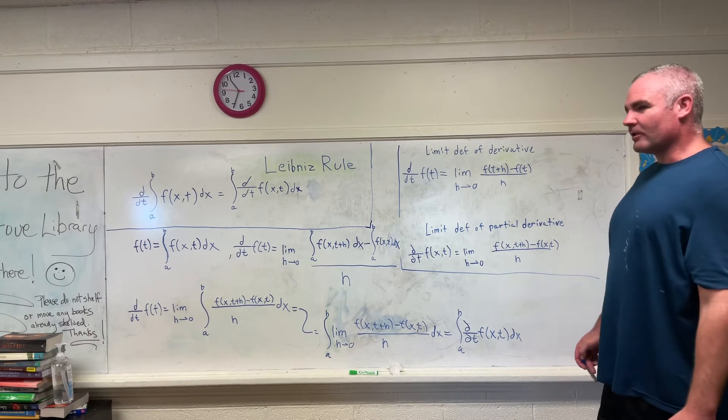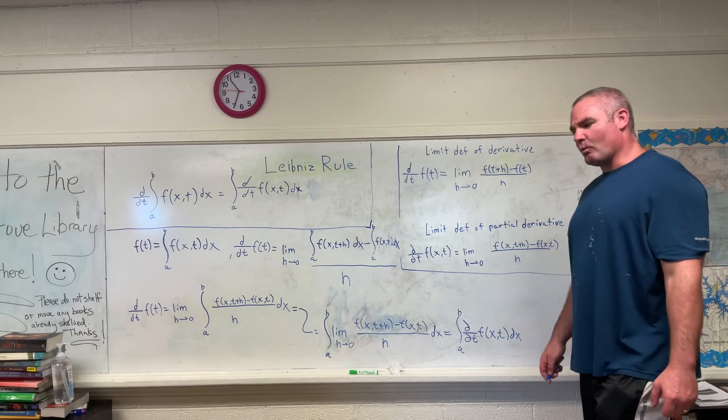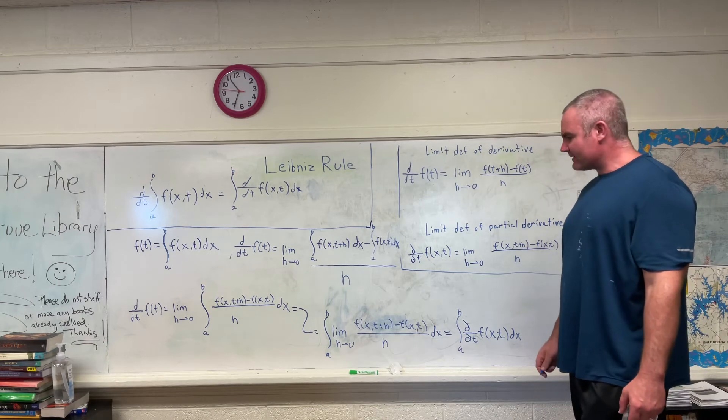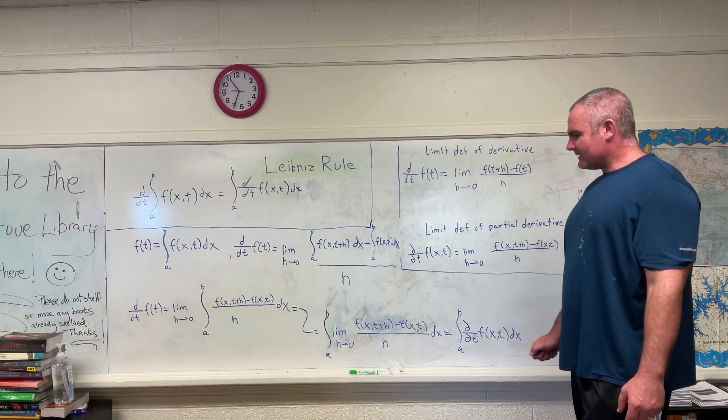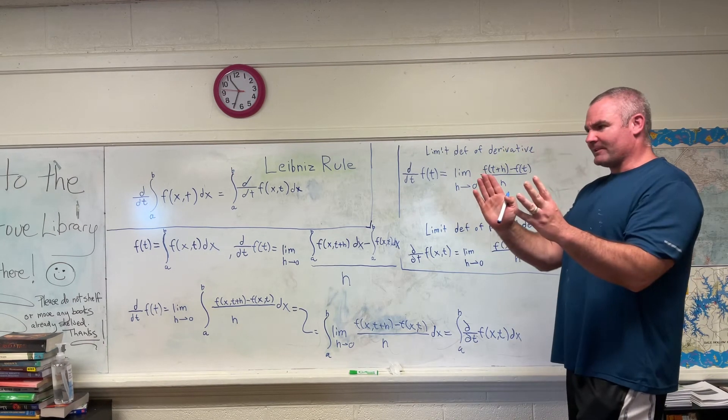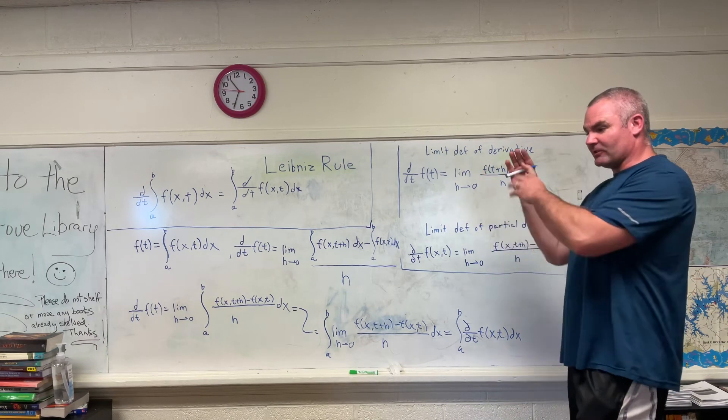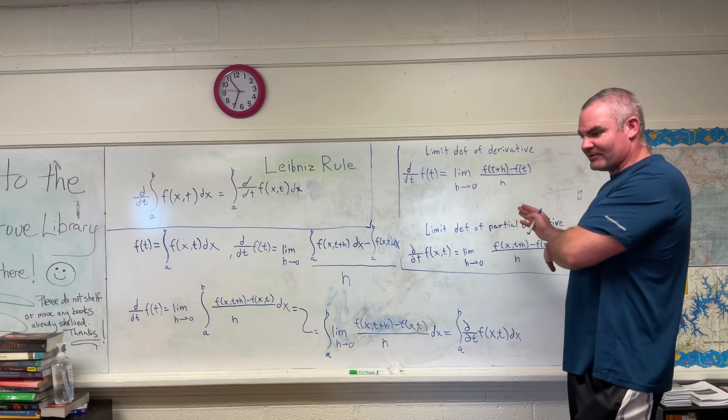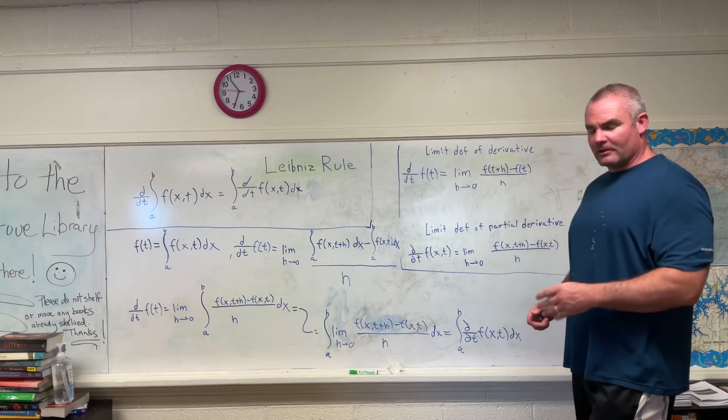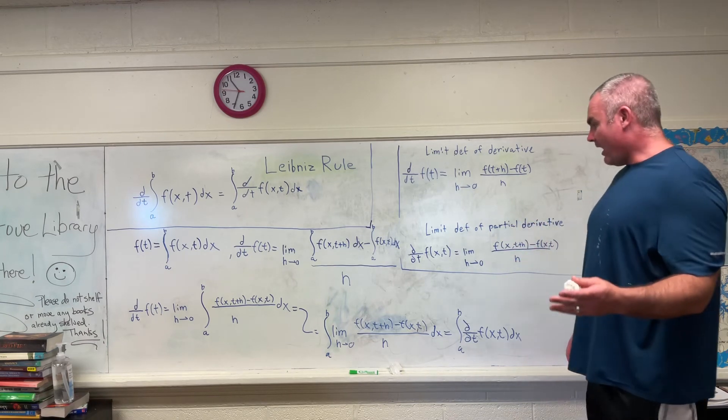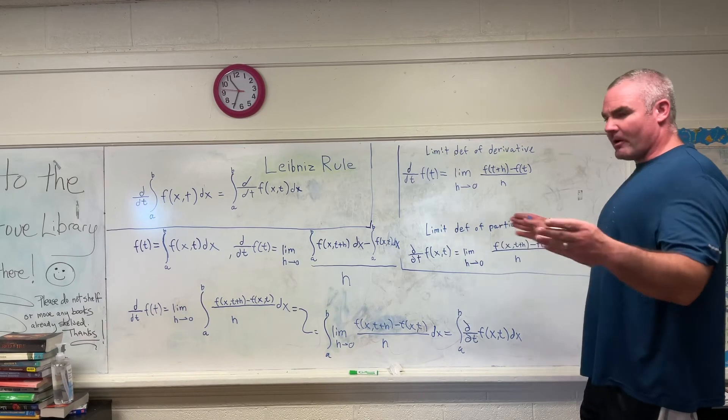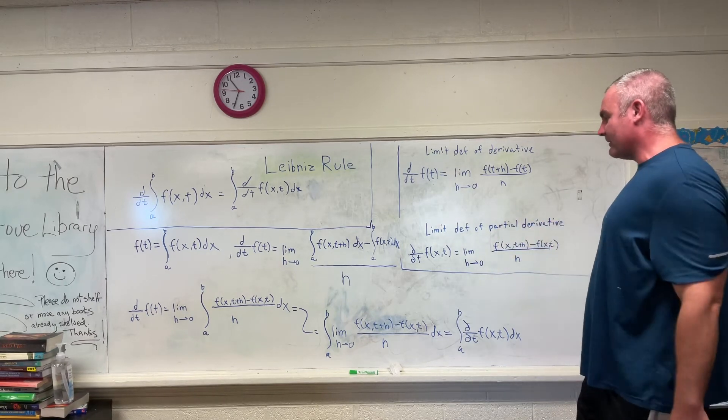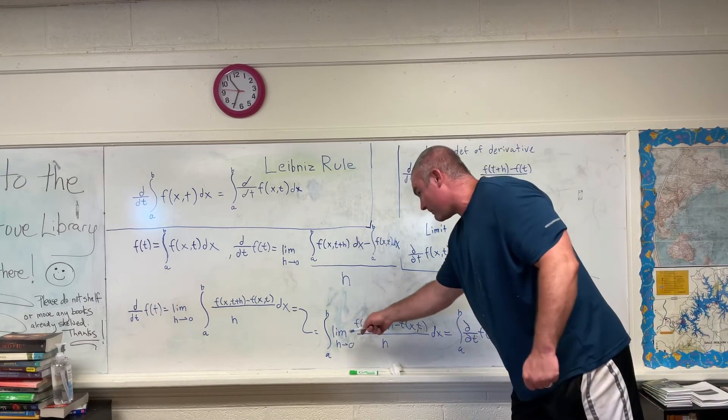And I think you learn pretty early on in calc one when doing limits that if you take the limit of something that's got h's in it plus the limit of something that's got h's in it plus the limit of something that's got h's in it, all of those limits going to zero, you can just add up all the stuff together and then take the limit, which is what I'm doing basically right here.